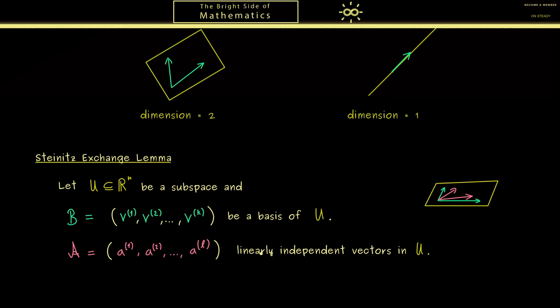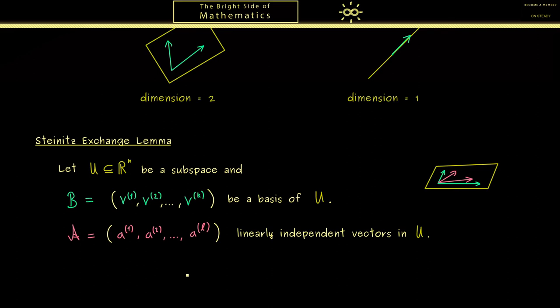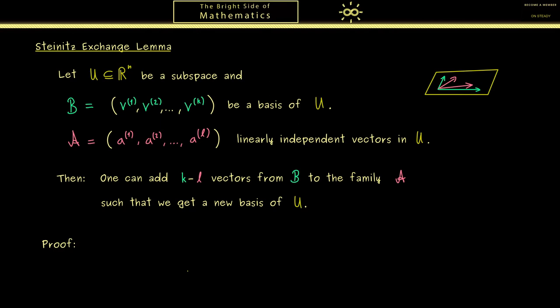Okay, and now Steinitz's exchange lemma tells us that we can form a new basis with this A by using some vectors in B. Indeed, the number of vectors we have to add is given by k minus l. And as I said before, if we do this, if we add these vectors, we get a new basis of our subspace U. In fact, this is already the whole claim, we can construct a new basis. It's called the exchange lemma because some vectors from the old basis are exchanged by new vectors.